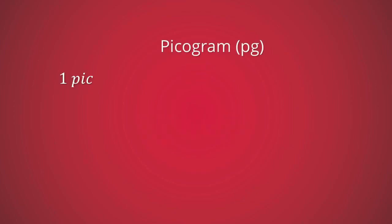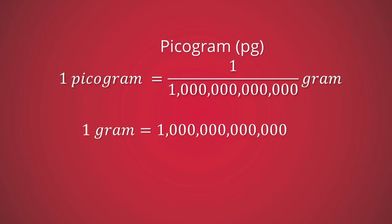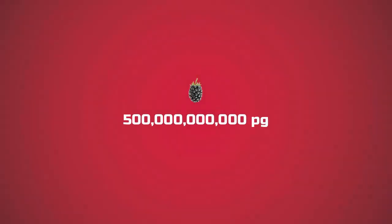A picogram is one trillionth of a gram, meaning one gram equals one trillion picograms. Picogram is not a unit of volume measurement — it is the unit of measurement of mass. One picogram is so tiny that a small blackberry has a mass of 500 billion picograms.